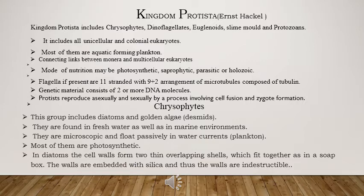For locomotion, Protista have flagella with a 9+2 arrangement of microtubules. These are the small units for flagella and cilia, made up of tubulin. As Protista are eukaryotes, they have a membrane-bound nucleus that consists of two or more DNA molecules as genetic material.